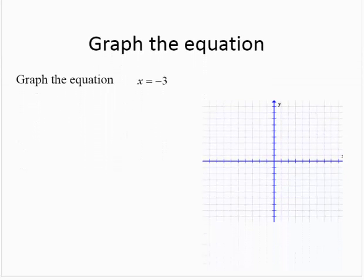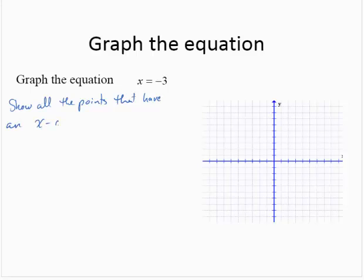Here we are asked to graph x equals negative 3. Similarly to the previous exercise, we want to show all the points that have an x coordinate of negative 3. Let's find at least one point that has an x coordinate of negative 3. There are many such points and they form a vertical line.